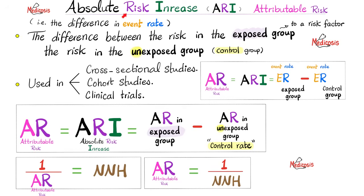The opposite of absolute risk reduction is called absolute risk increase or attributable risk. In this case, it's bigger number minus smaller number — the bigger number being those exposed to the bad thing. For example, cancer rate in people exposed to smoking versus cancer rate in people not exposed to smoking. Bigger number minus the smaller number gives you the attributable risk, and the reciprocal is called the number needed to harm.